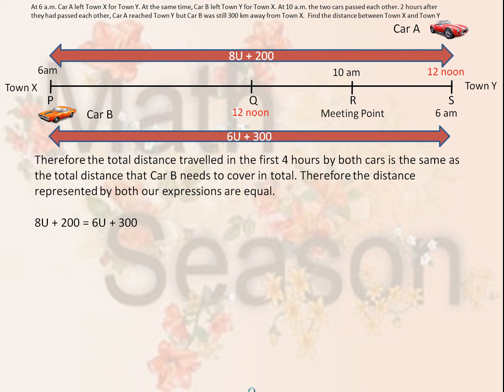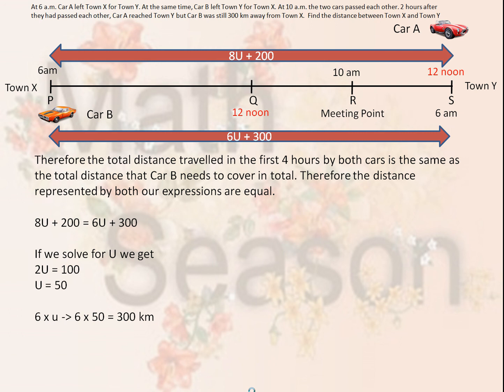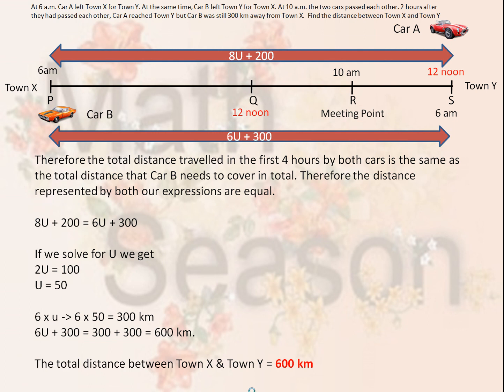If we solve that equation: 8U plus 200 equals 6U plus 300. Solving for U, we get 2U equals 100, or U equals 50. So 6 times U equals 6 times 50, equals 300 kilometers. Therefore, 6U plus 300 equals 300 plus 300, equals 600 kilometers. The total distance between town X and town Y is equal to 600 kilometers.